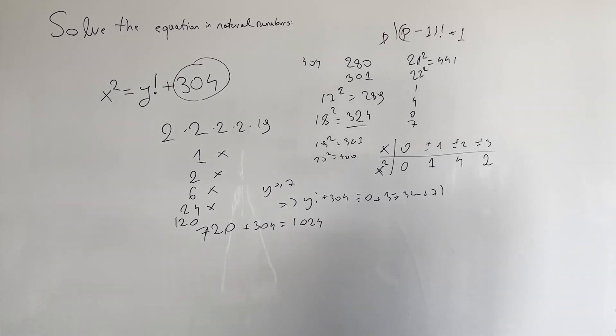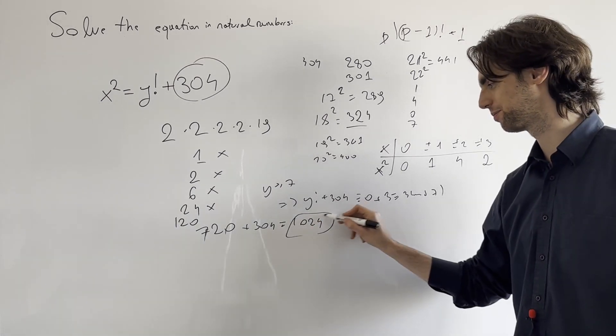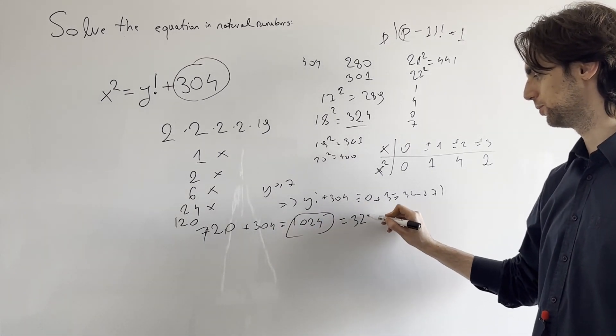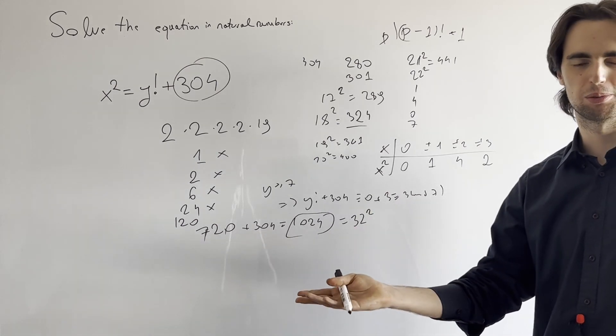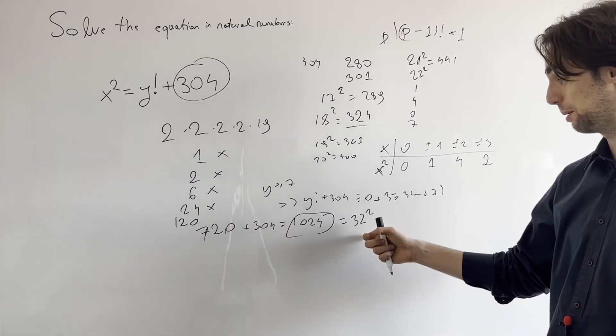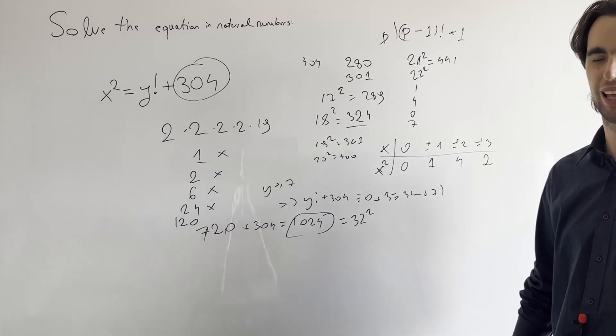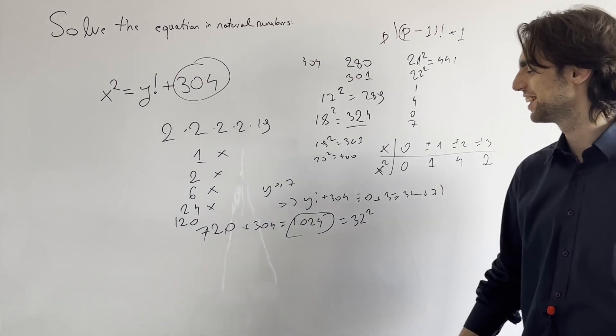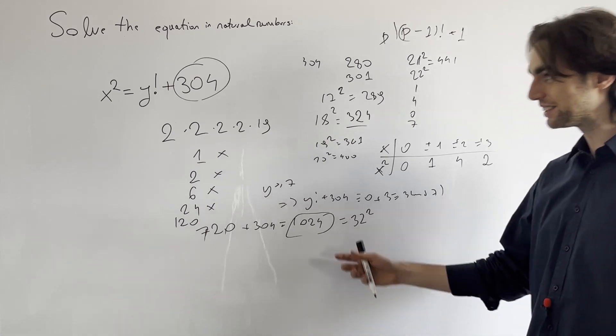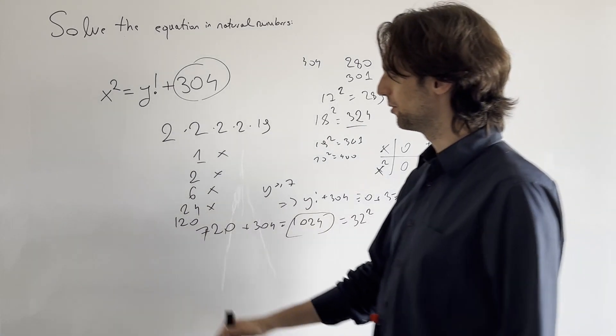Oh, this plus 304 is equal to 1024. Oh, wow, cool. And this is what? This is equals 32 squared. I finished computer science at university as my bachelor's, so I just see this as 2 to the power of 10 immediately. And so there is a solution. Yeah, interesting.